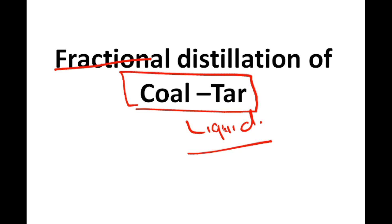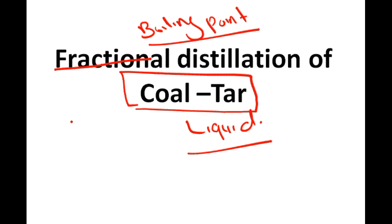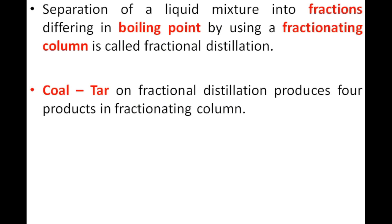Fractional distillation is the process by which many of the components are separated out from the coal tar on the basis of their boiling point. On the basis of boiling point, we separate the different substances from coal tar. When we perform the fractional distillation process, the components we get from coal tar are separated and then used for different purposes.